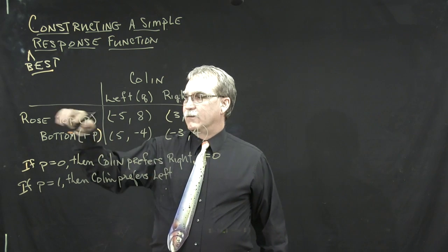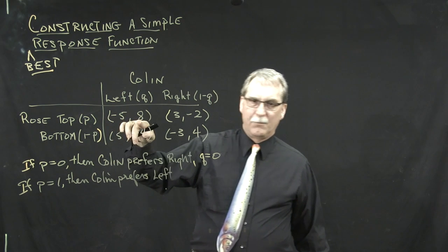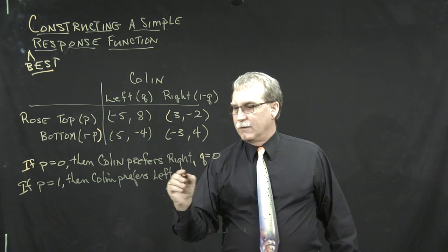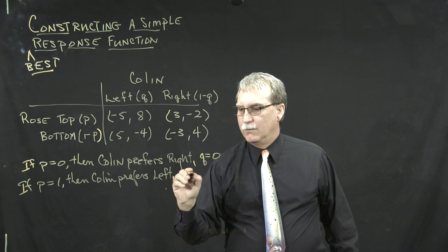Because if we're always in the top row, Colin prefers the payoff of 8 over the payoff of negative 2. This implies that Q equals 1.